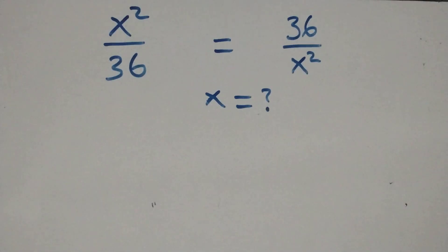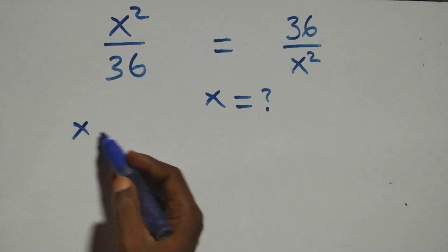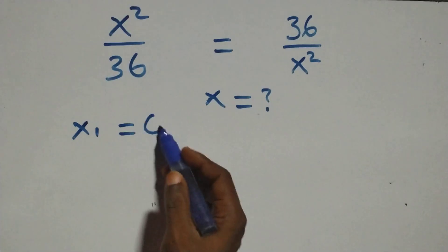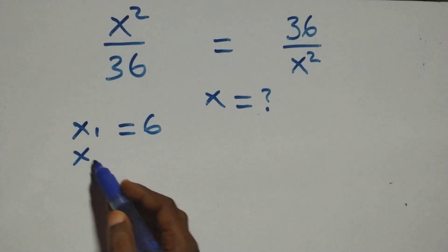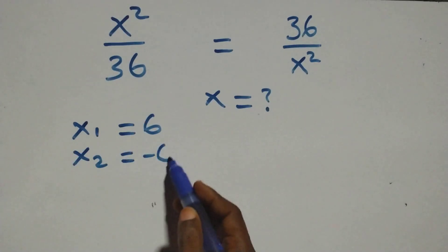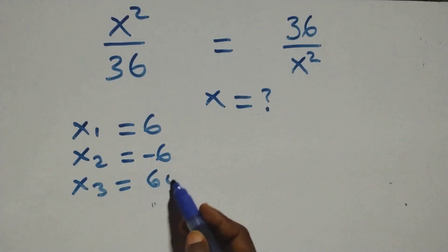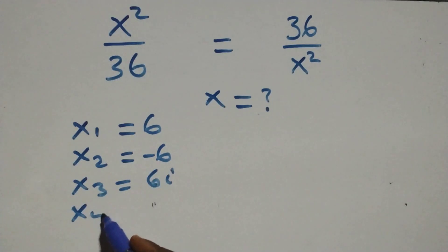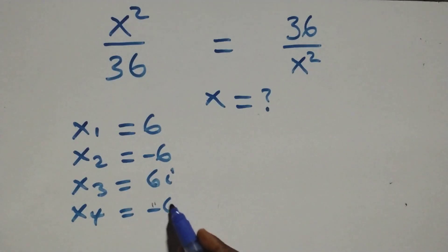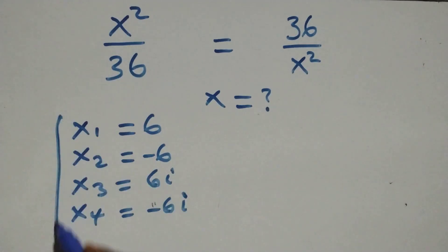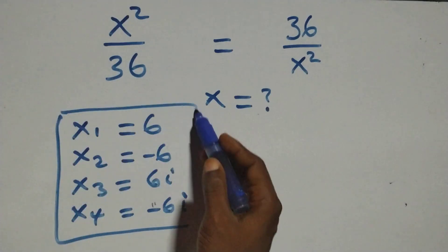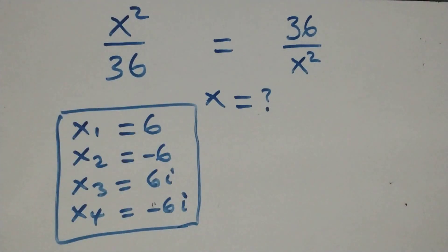All together we have four solutions: two real and two complex. The first solution x₁ = 6, x₂ = −6, x₃ = 6i, and x₄ = −6i. Now let's check if these satisfy the given problem by substituting each value of x.